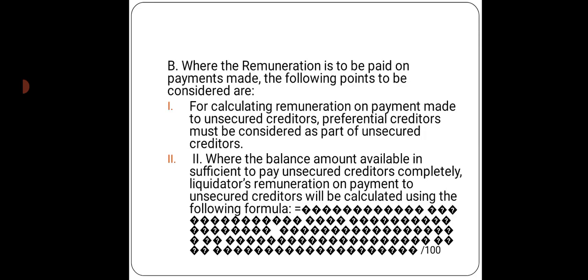Unsecured creditors means preference shareholders and equity shareholders, who are actually the owners of the company. When there is a remaining amount with the company, the liquidator has to distribute some amount to them also if the amount is available. If there is no amount remaining, there is no need to make the payment. If the amount is balanced, he has to pay the shareholders as well.